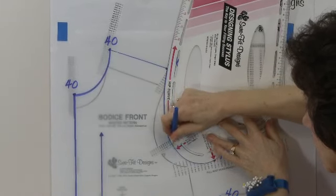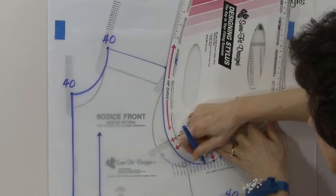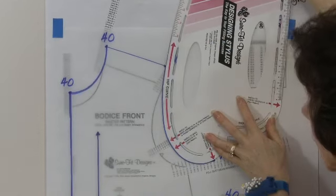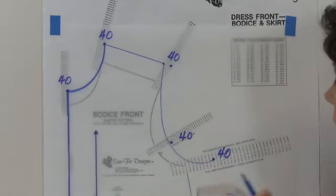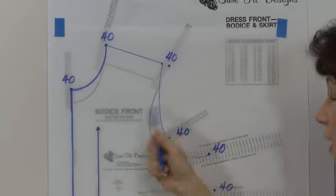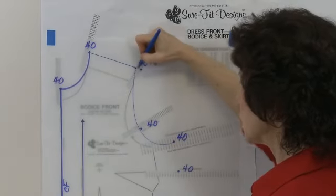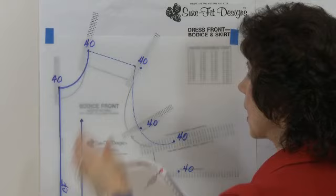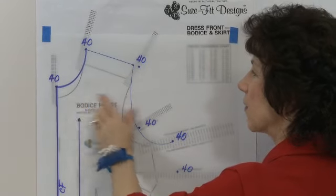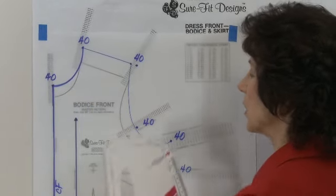And then you're going to draw around the designing stylus like this, and when I take that away that is going to give you one of the best fitting armholes that you've ever had. It narrows the shoulder line and it automatically starts removing some of the width that you don't need in that upper chest area.